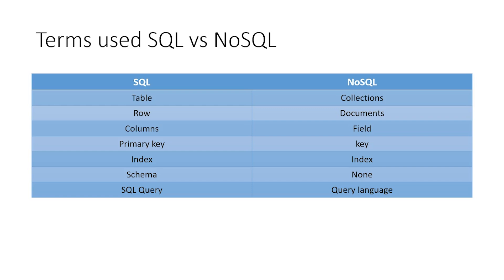In SQL we talk about a table, collections, rows, columns, and fields. In SQL, if you look at the primary key, we are going to set it as default. In MongoDB, there will be a primary key — if we use the ID or object ID, it will be stored as the primary key.